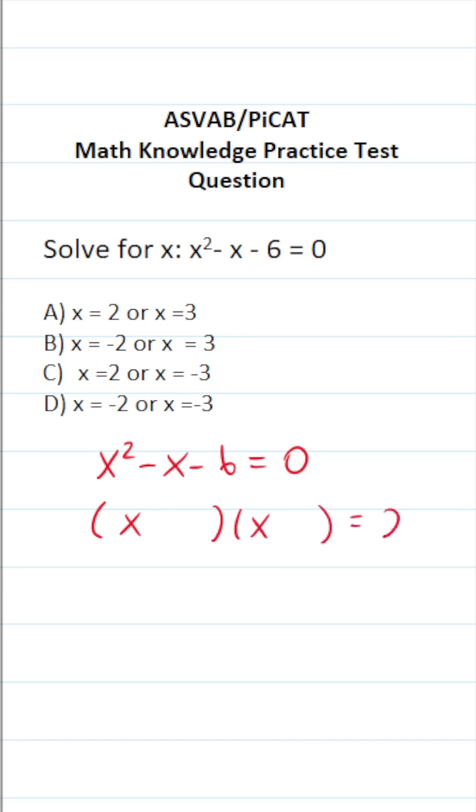x times x equals 0. Now, in order to factor this one, we're looking for two numbers that multiply to negative 6 and add to negative 1. That's going to be negative 3 and positive 2.